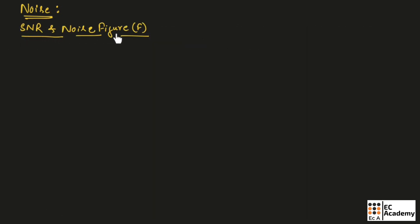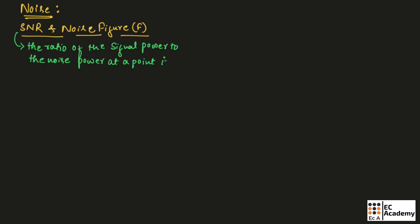Let us understand signal to noise ratio and noise figure. We can define signal to noise ratio as the ratio of the signal power to the noise power at a point in the circuit. It is the measure of signal power relative to noise power at a particular point. Signal to noise ratio is expressed as S/N = PS / PN.